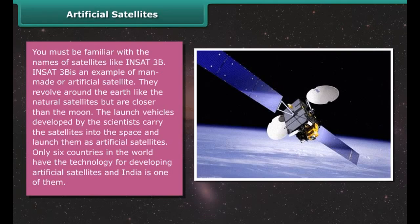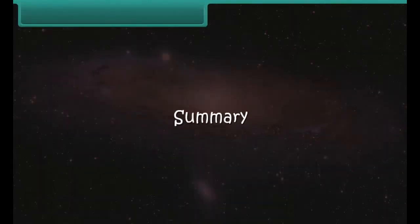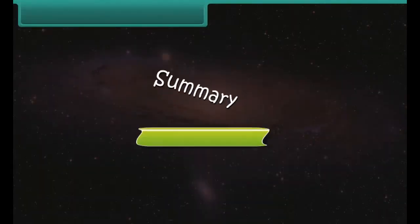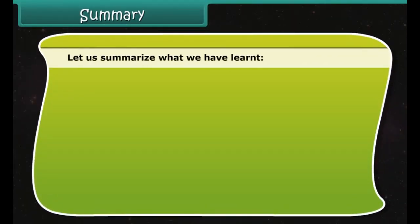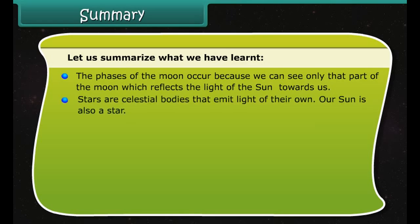Mars is the fourth planet from the Sun. Since Mars is quite far from the Sun, it is a cold planet. Mars has an atmosphere containing traces of carbon dioxide, nitrogen, hydrogen, and oxygen, though the oxygen on Mars is too little for the survival of life there.